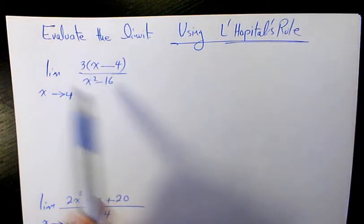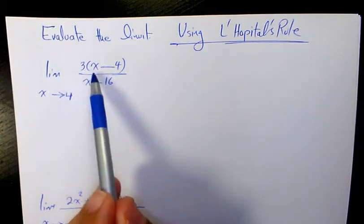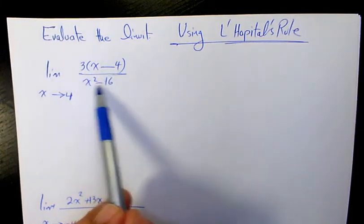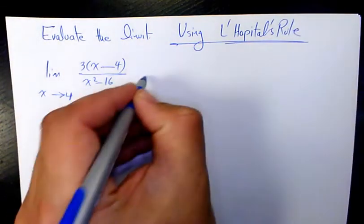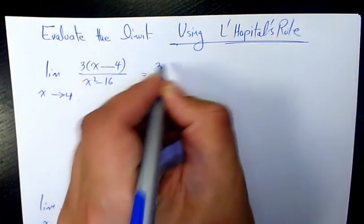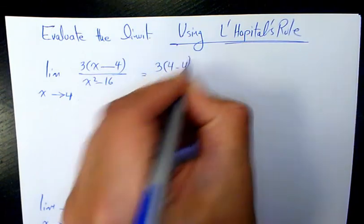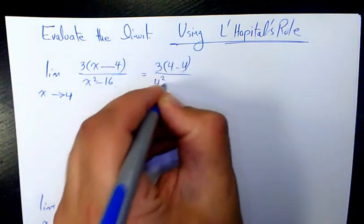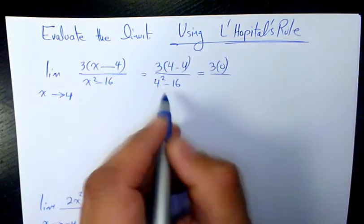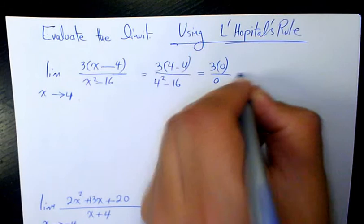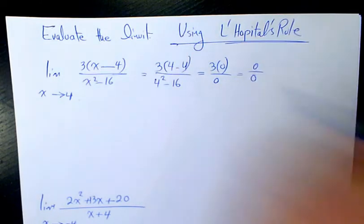The first example I have is limit of 3 times x minus 4 over x squared minus 16 when x is approaching 4. If you substitute there, it's going to be 3 times 4 minus 4 over 4 squared minus 16, which will be 3 times 0 over 16 minus 16, which is going to be 0 over 0.